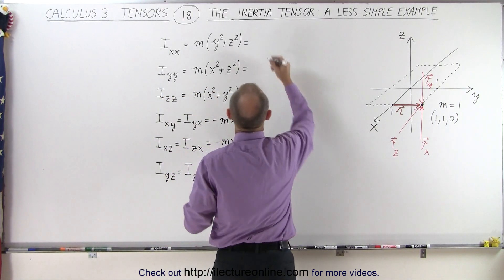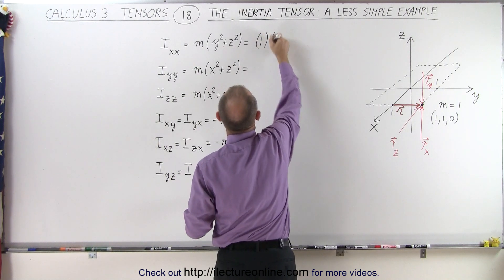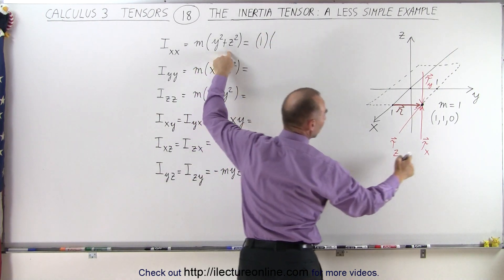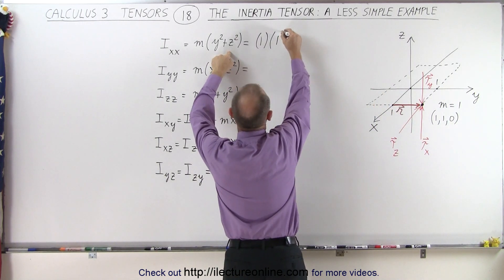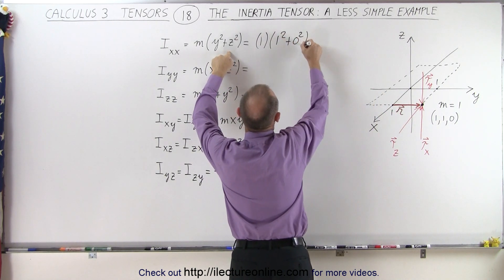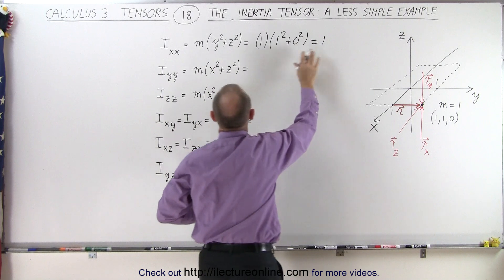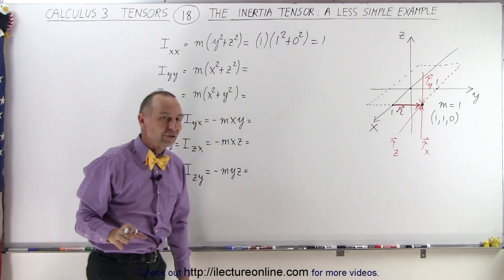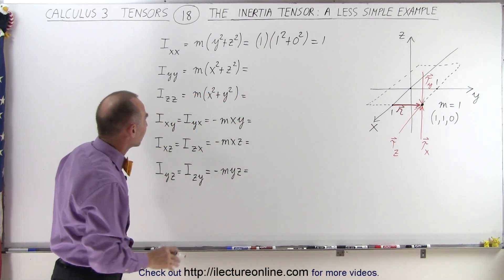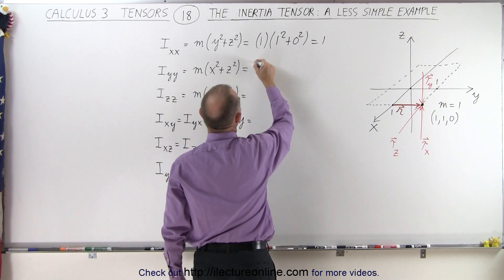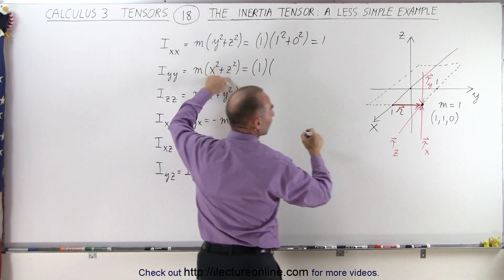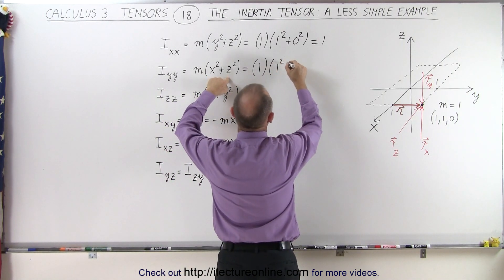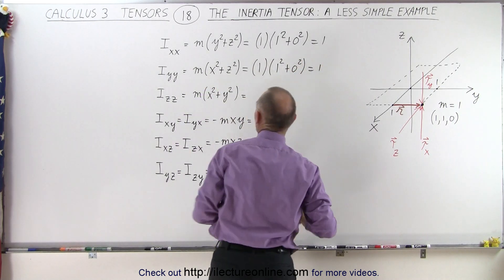The mass being equal to 1, and we're going to multiply that times y-squared plus z-squared. So we have y-squared here, that would be 1-squared plus 0-squared, that's equal to 1. So definitely, we're going to have an angle acceleration around the x-axis. For the y-axis, we have 1 times x-squared plus z-squared, that would be 1-squared plus 0-squared, that's also equal to 1.